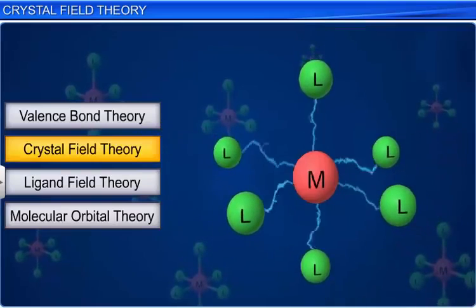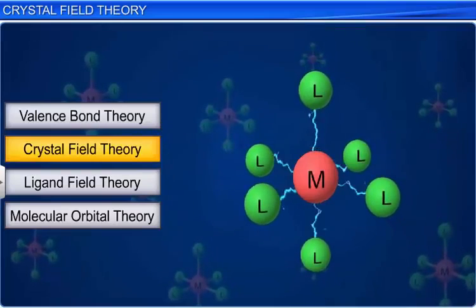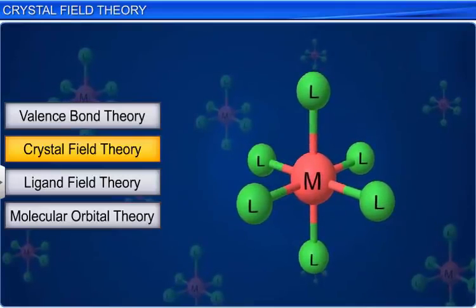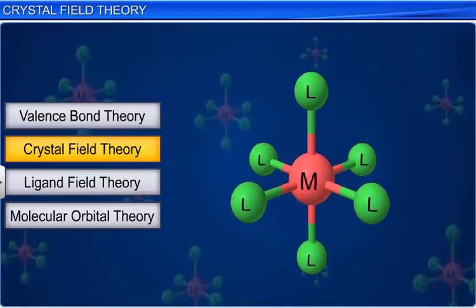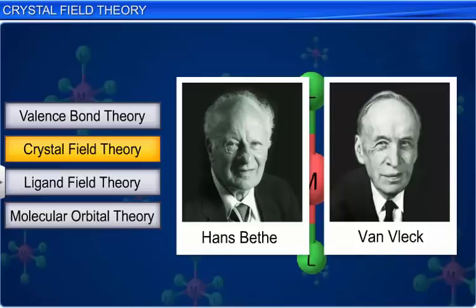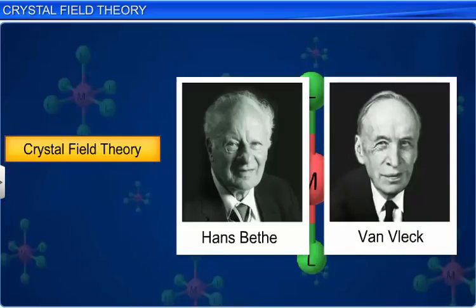The crystal field theory was proposed by Hans Bethe and Van Vleck. This theory gives a much more satisfactory explanation for the bonding and the properties of complexes than the valence bond theory.